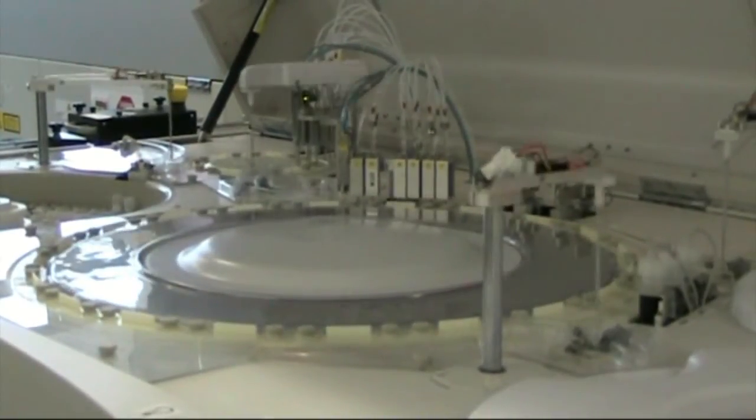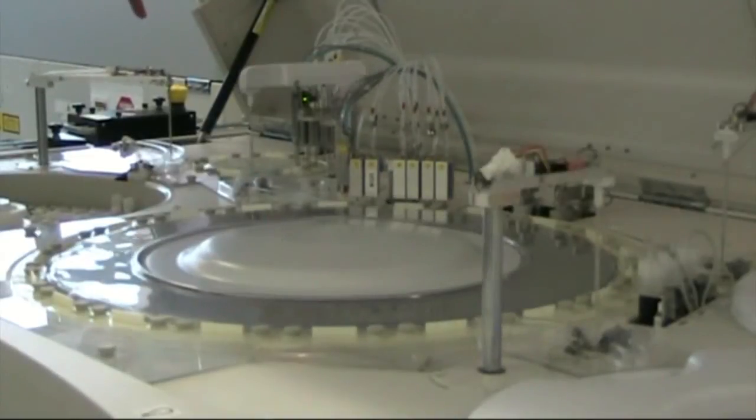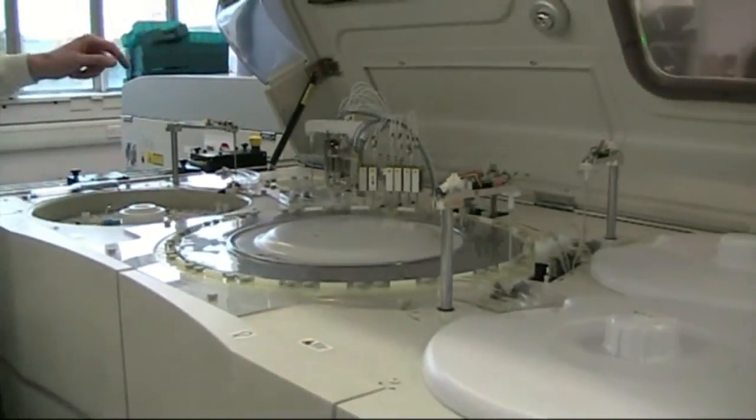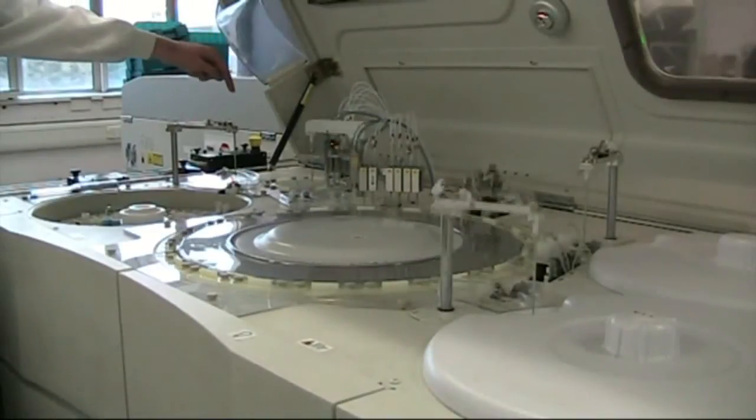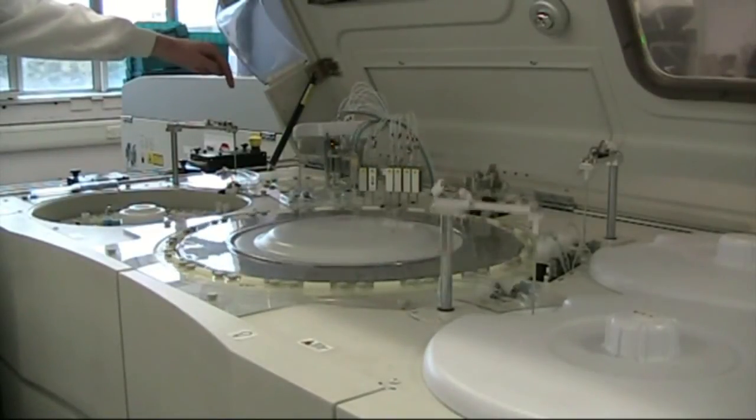And then it puts an aliquot into that dilution turntable at the back. It makes a dilution of that sample with saline, a 1 in 5 dilution.